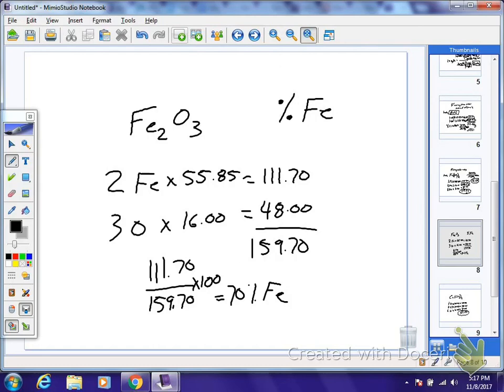Okay, so hopefully you'll be able to work it out. If you got the wrong answer, this is the correct setup. You got two irons, multiply it by 55.85, you get 111.70 for those two. You have three oxygens, take it times 16, which will give you 48. Adding everything up, you get a total weight of 159.70.